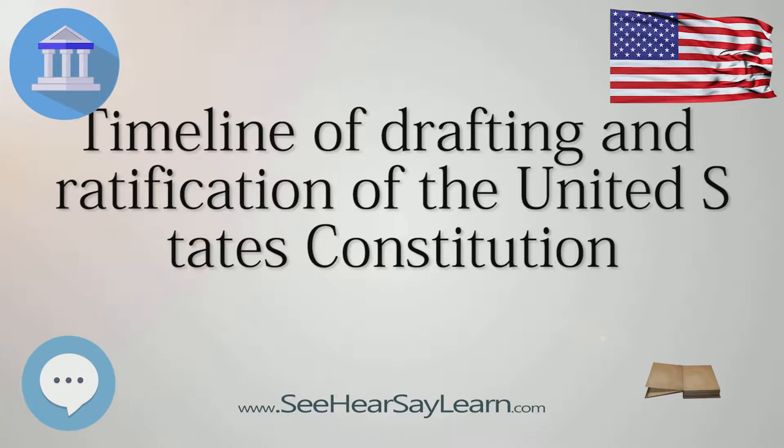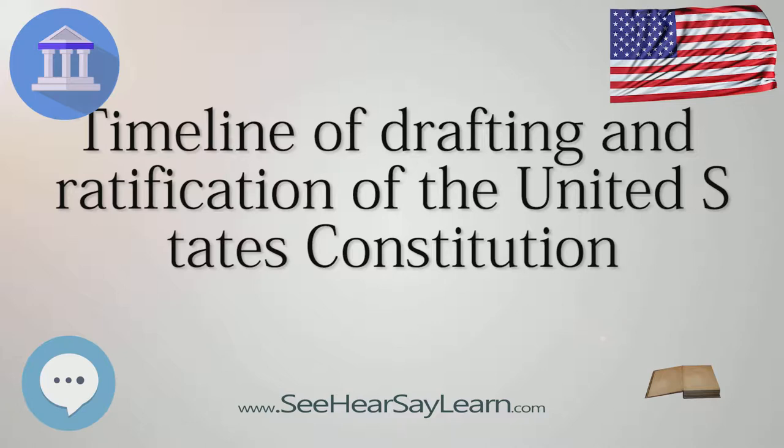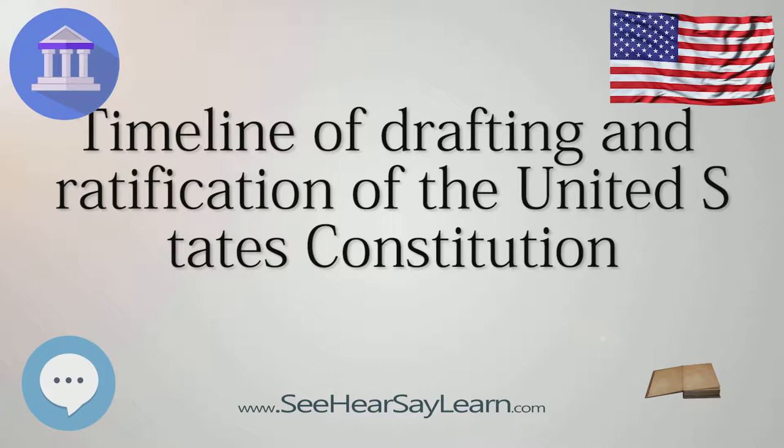September 14: Annapolis Convention Adjourns. The convention report, sent to Congress and the legislatures of the various states, contains a request that another convention be held the following May at Philadelphia to discuss amending the Articles of Confederation.